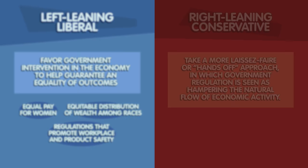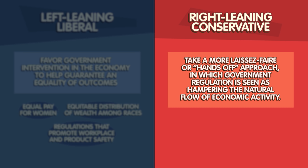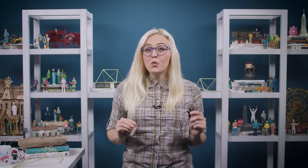By contrast, conservative or right-leaning perspectives may tend to take a more laissez-faire or hands-off approach, in which government regulation is seen as hampering the natural flow of economic activity. On social issues, one way of understanding the gap between left and right is in terms of the different kinds of authority that each faction tends to support or endorse. Here, the right tends to build its arguments on traditional authority, while the left tends to look to legal rational frameworks.